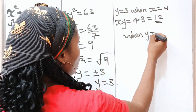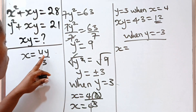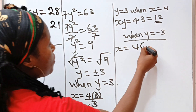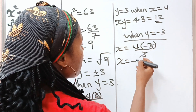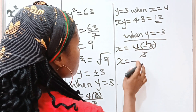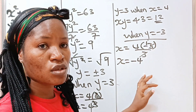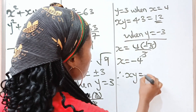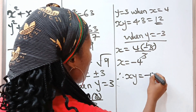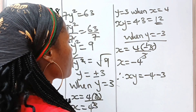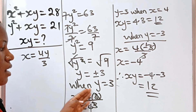For case 2, when y equals minus 3: x equals 4 times (minus 3) divided by 3, which gives x equals minus 4. Therefore, xy at this point equals minus 4 multiplied by minus 3, which also equals 12. So xy is still equal to 12 using both cases.